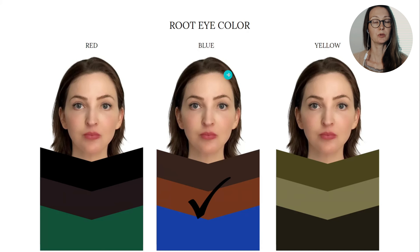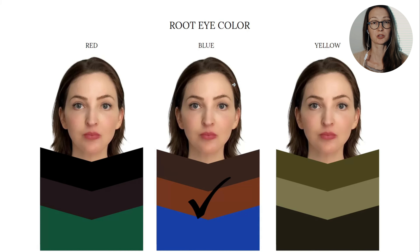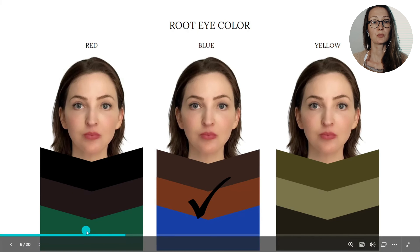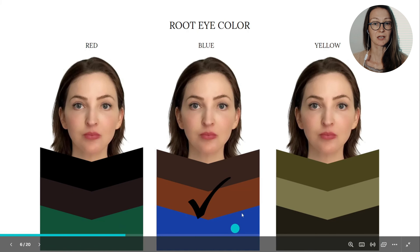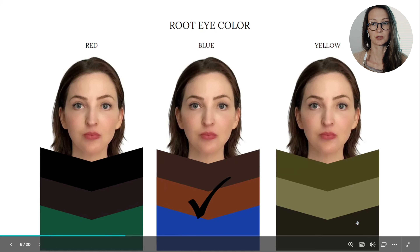Her eyes are also in the blue spectrum. Generally speaking, for each root skin color there are only very few possible eye colors. For red you will generally see certain eye colors, for blue you will see others, and for the yellow root skin color you will generally find a distinct set of eye colors, with a few exceptions.